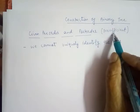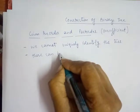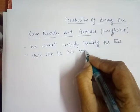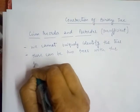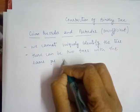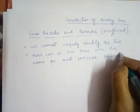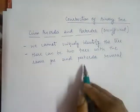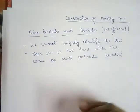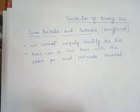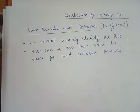This information is insufficient for constructing the binary tree because there can be two trees with the same pre-order and post-order traversal. By these two traversals, we cannot uniquely identify or construct the tree, because with this information we can construct more than one tree with the same pre-order and post-order.